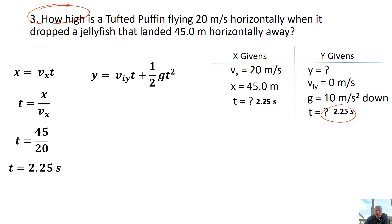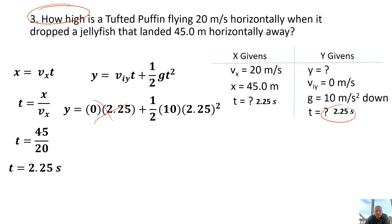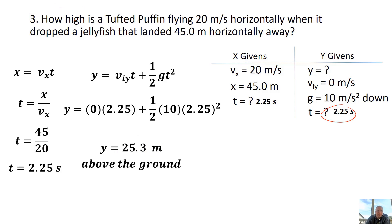Now I'm ready to solve for y. There's an equation in your projectile motion section. Plugging in your numbers — don't forget that the first part cancels out because viy is zero — I get 25.3 meters. On E-class, you write 25.3 as the number and meters as the unit. Don't worry about writing 'above the ground.'